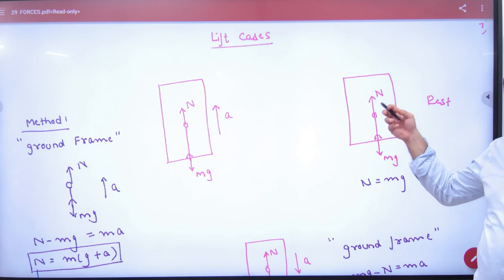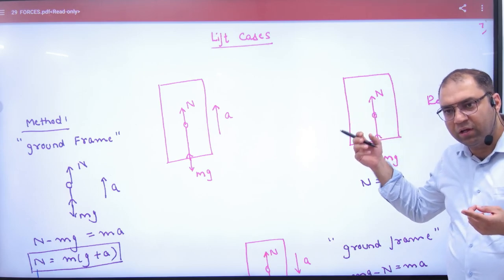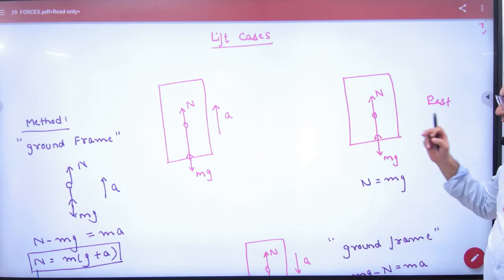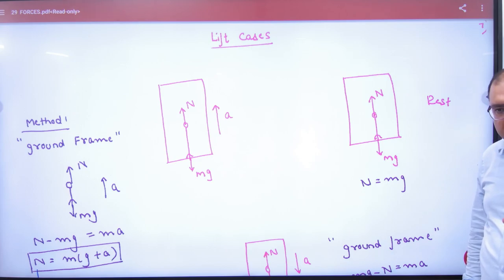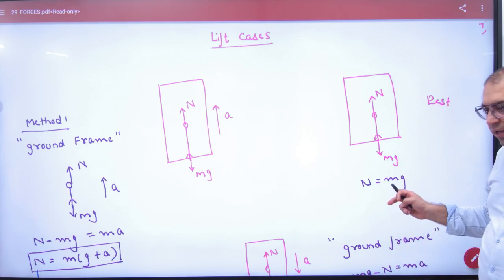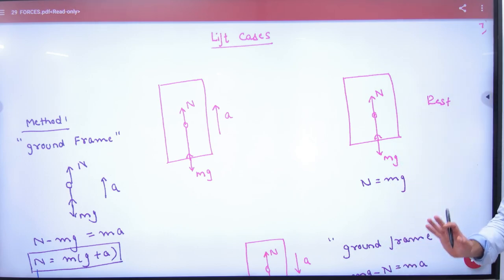And the normal reaction that the ground will place on it is N. So if you ask the man who is at rest, rest means that the force is equal to upper and lower. That means N is equal to Mg. So the first point is clear here.